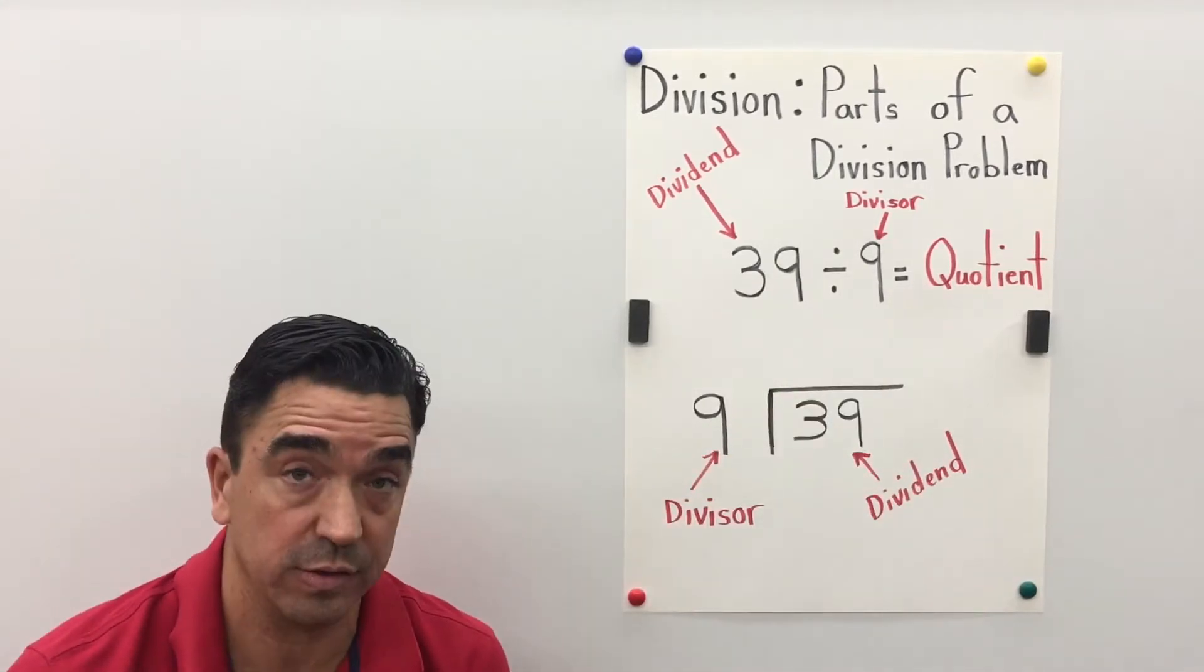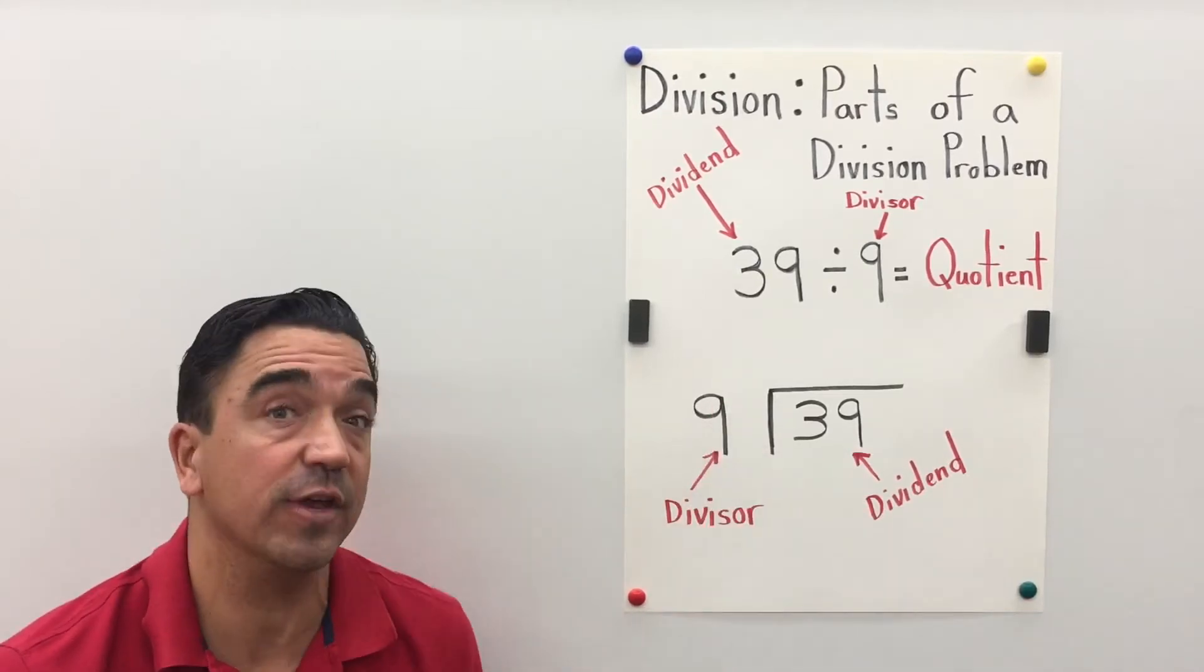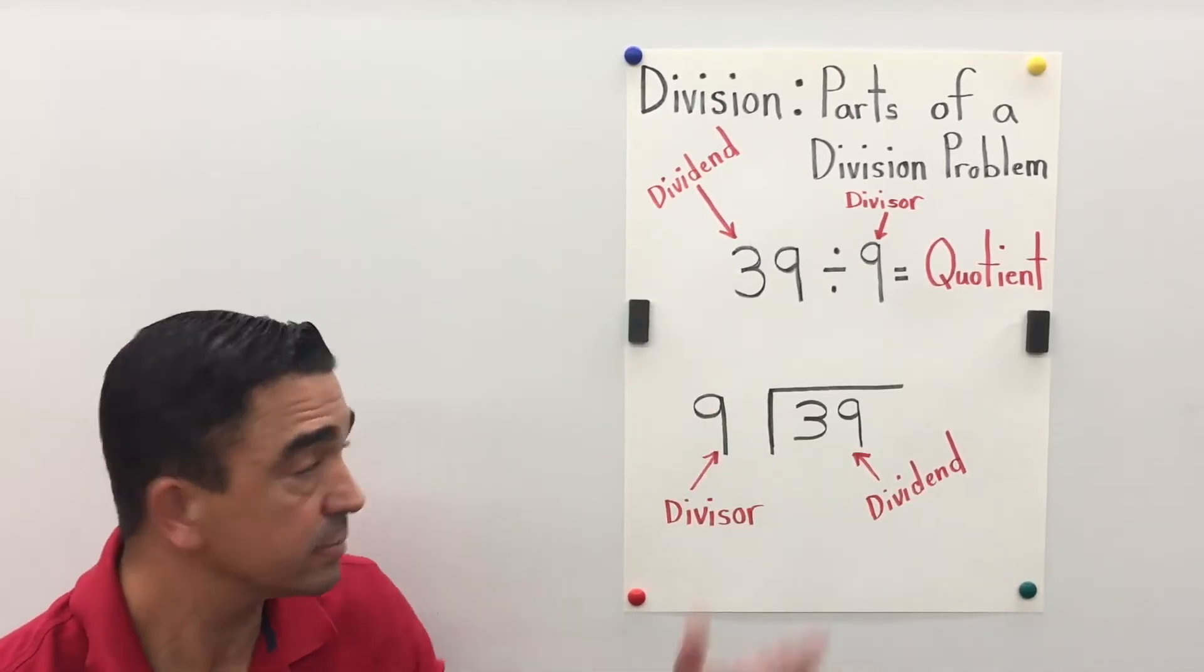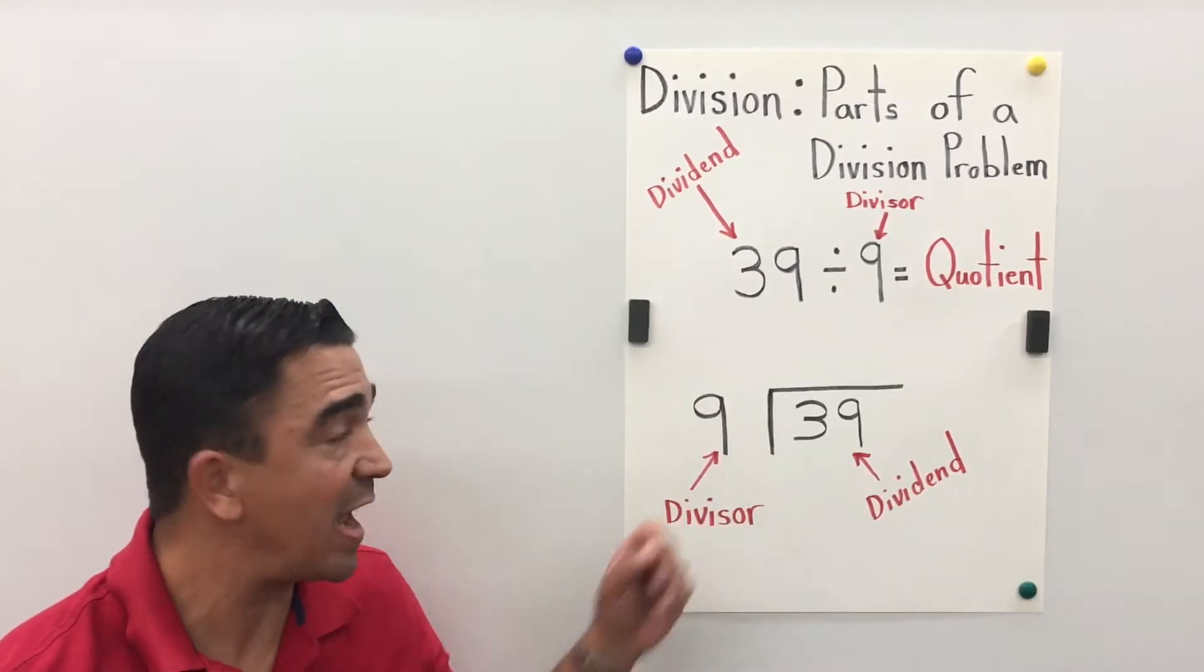The quotient is the answer to a division problem. Let's take a look down here. 39 divided by 9.